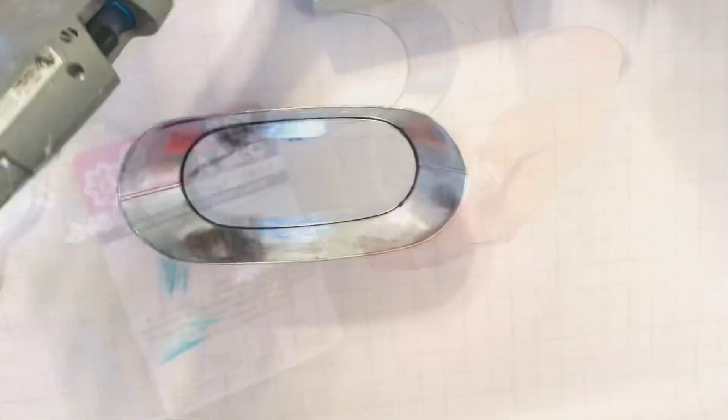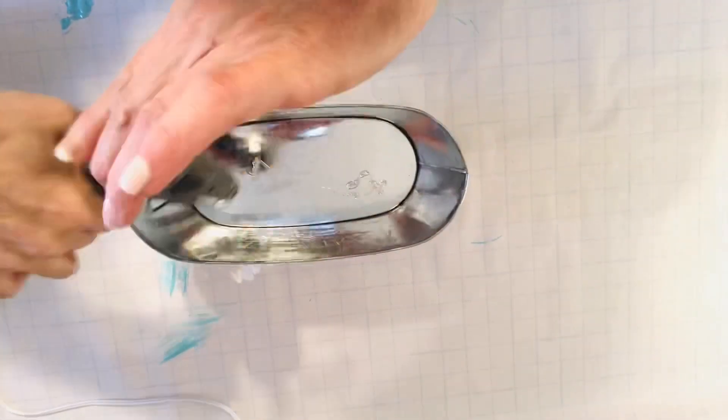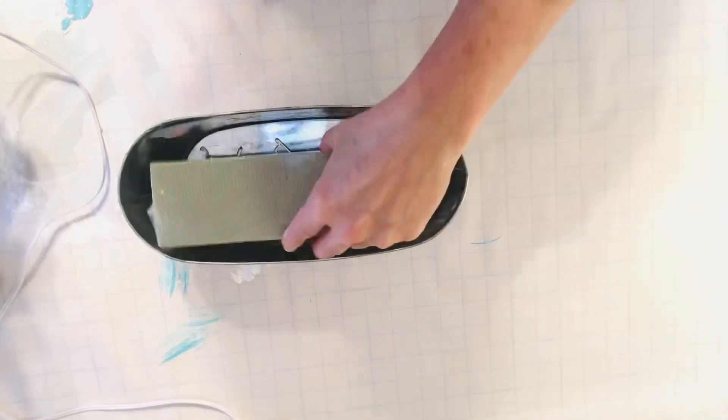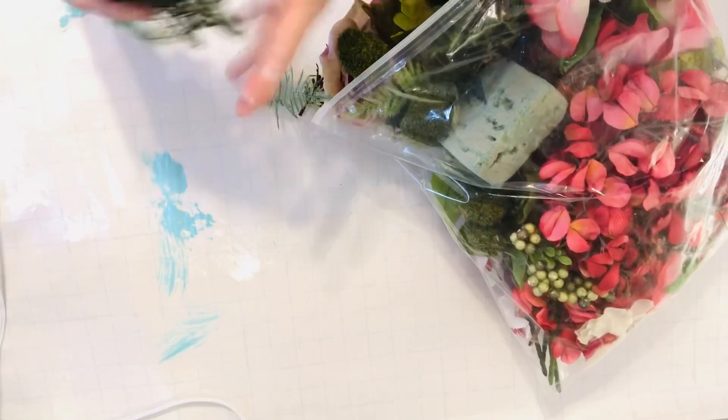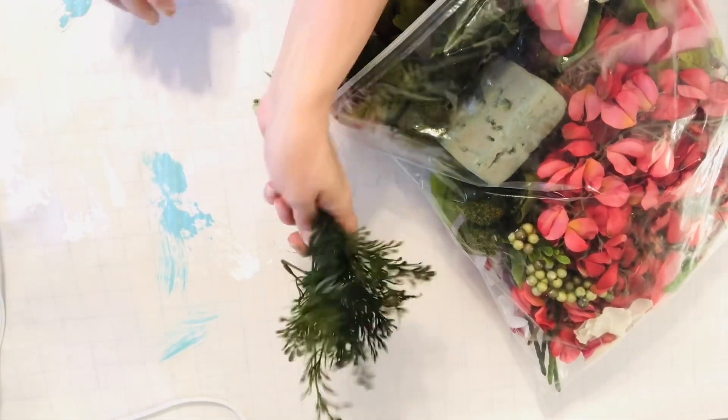Dollar Tree sells these floral bricks in different sizes and in green and white. I chose the longer green one. And without even taking the plastic off, I just glued that to the bottom of this flower tin. It fits perfectly.